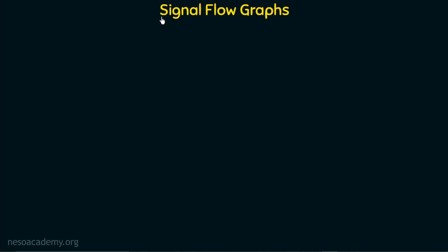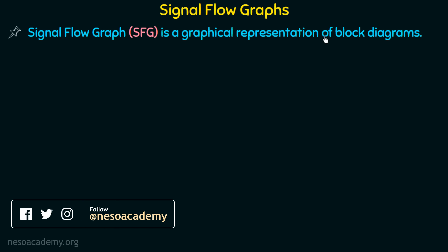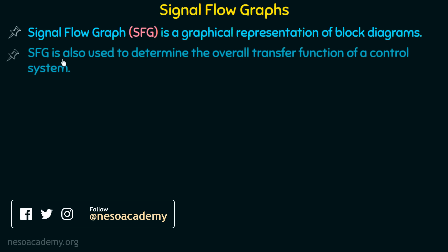Firstly, we will discuss some important points of signal flow graphs. Signal flow graph, SFG, is a graphical representation of block diagrams. We will discuss how we can represent block diagrams in a graphical manner in signal flow graphs. SFG is also used to determine the overall transfer function of a control system.